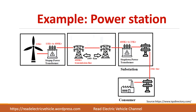Consider another example: a power station generating power at 11 kV, which is stepped up to 400 kV for transmission and then distributed to the consumer. Here, 11 kV is converted to 400 kV — this is an AC-AC conversion where only the magnitude is changed and there is no change in frequency.